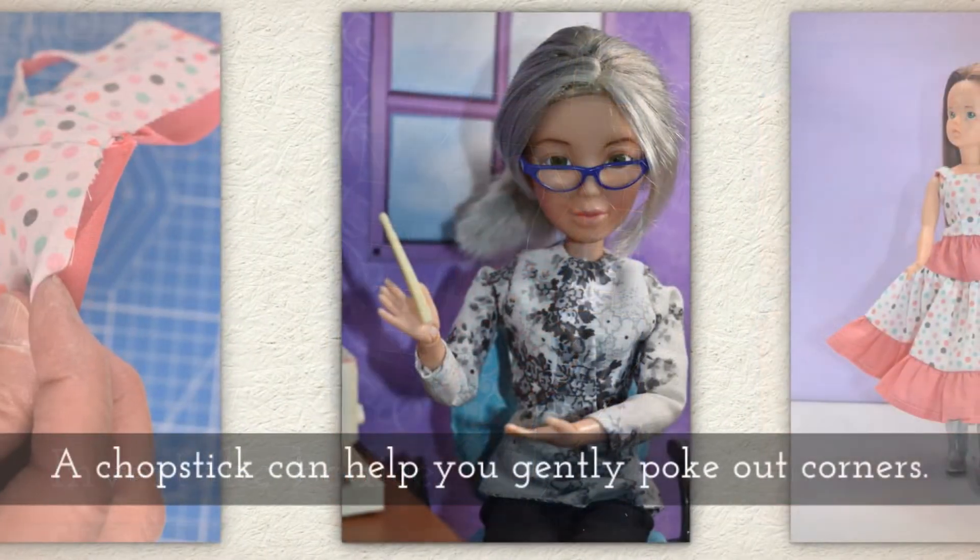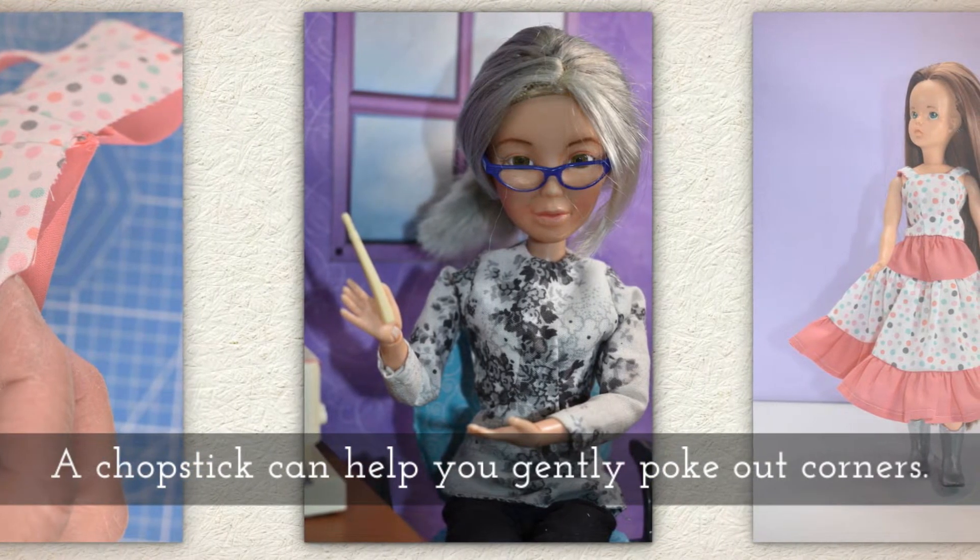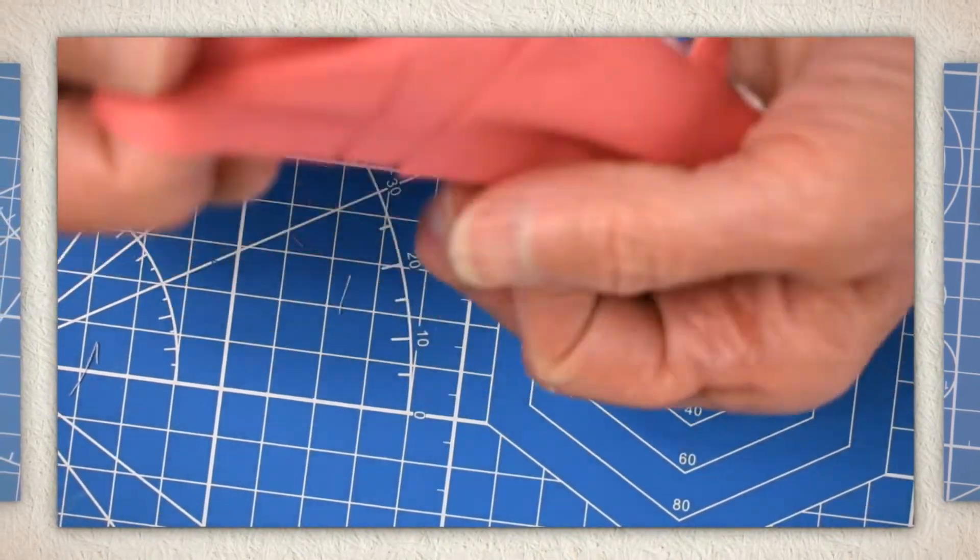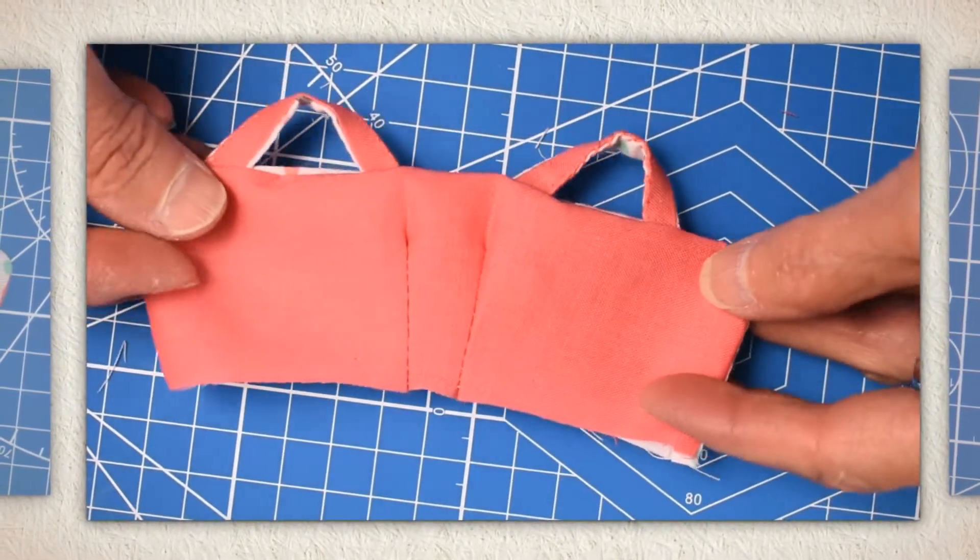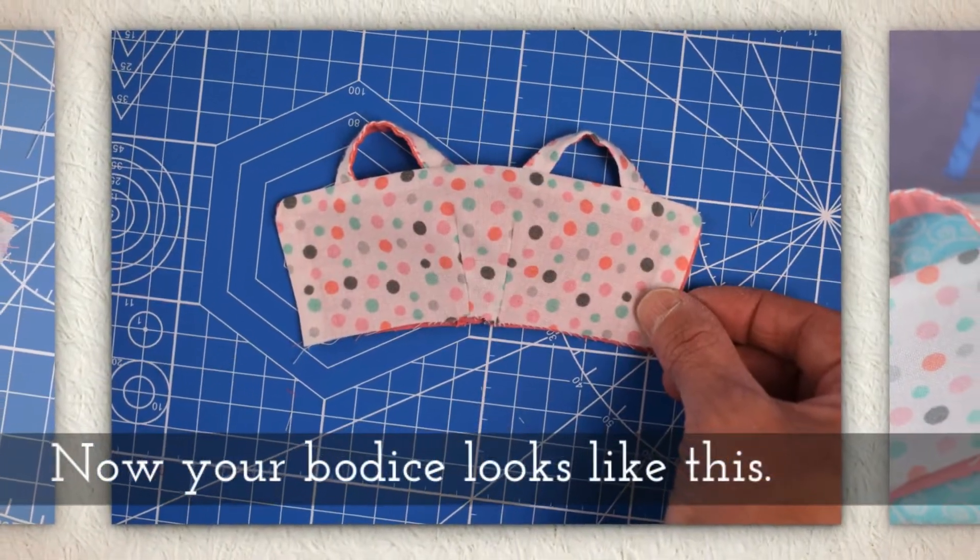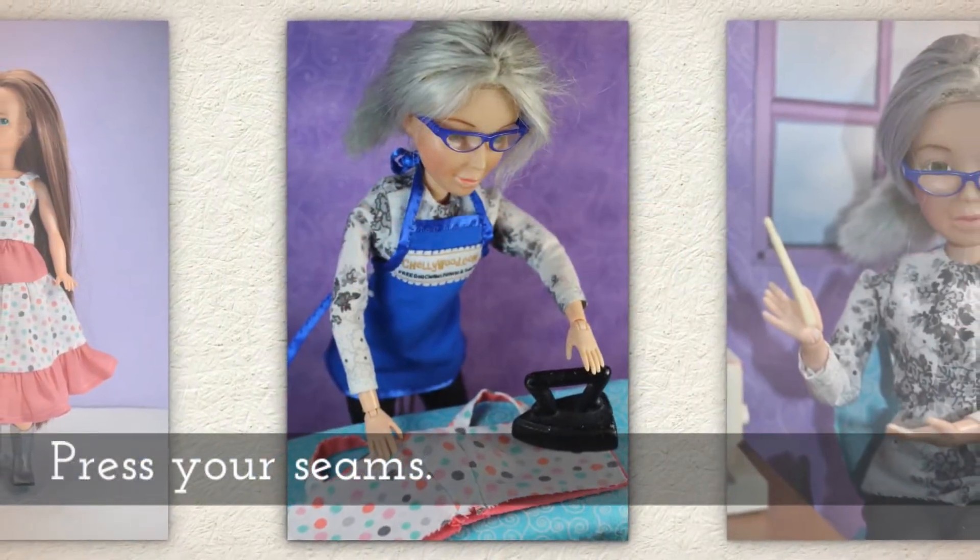Invert the bodice. Now a chopstick can help you gently poke out corners but I say gently with emphasis. And here I am inverting my bodice and you'll see those straps just pop right out. But you might want a chopstick to poke out the corners a little and now your bodice will look like this. Press your seams.